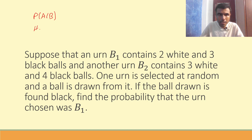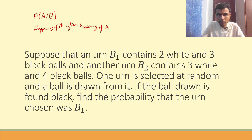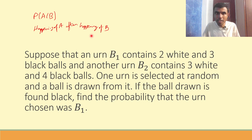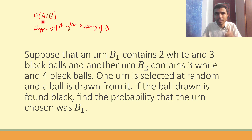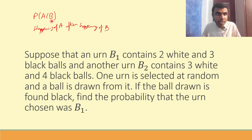Note it down: happening of A after happening of B. That means first B has happened, and A is happening after B has occurred. First event B has occurred; now, after event B has occurred, event A is occurring.